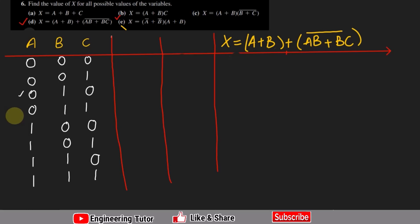What we have to do is use these parts to find the output. In these columns we have to split these parts: first we have to solve a plus b, then ab plus bc. Once we write them, at the end we will write them together and it will give the output, which is (ab plus bc) whole complement.